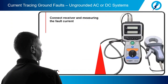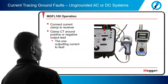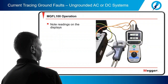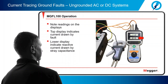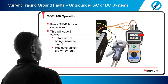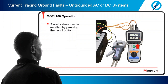Now we are ready to evaluate the fault. Connect the current clamp to the receiver and place the current clamp around either the positive or negative output lead — whichever is outputting current to the fault. Connect the sync cable between the receiver and the transmitter. The top display will indicate the current the fault is drawing; the lower display will indicate the reactive current drawn by stray capacitance on the circuit. It is the actual fault current on the top display that will be traced. Press the save button on the receiver to save three values: the total current being drawn by the circuit, the resistive current being drawn by the fault, and the reactive or leakage current drawn by stray capacitance. These values can be recalled at any time by pressing the recall button.